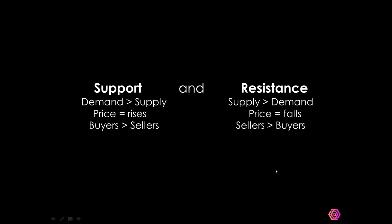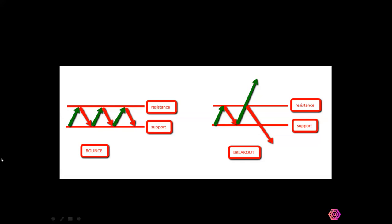Now we relate this to the charts. If you look at what we have in front of us, this is how price moves. Here is the support, and here is the resistance. The support is where the buyers take the price up to the resistance, and the resistance is where the sellers take the price down to the support. The buyers take it up, the sellers take it down — back and forth.